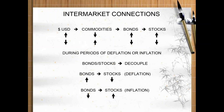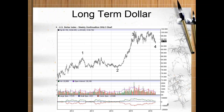The standard textbook intermarket relationships: a rising U.S. dollar means falling commodities — especially oil, which is priced in dollars — while bonds and stocks tend to rise. The opposite holds in reverse. You can overlay a nuance depending on whether we're in deflation or inflation, which can cause a decoupling of the bond-to-stock relationship. This sets the intermarket primer as a starting point.